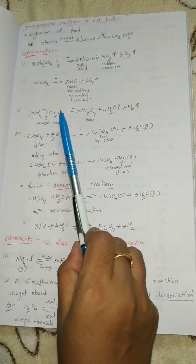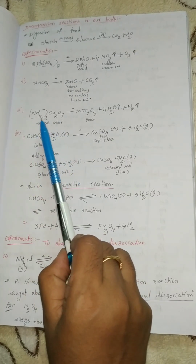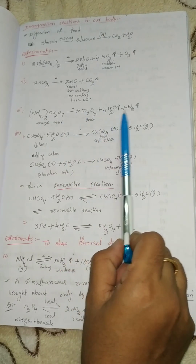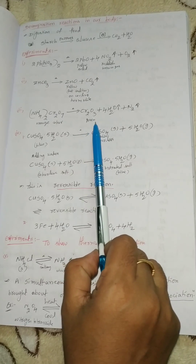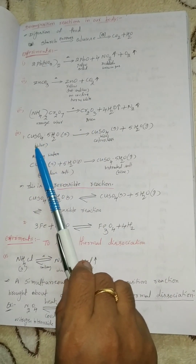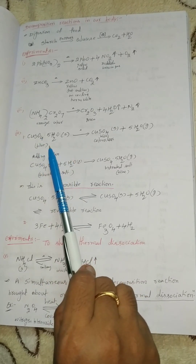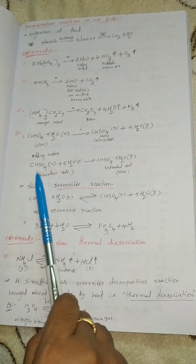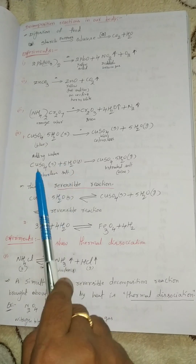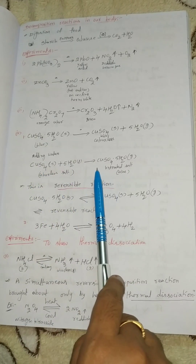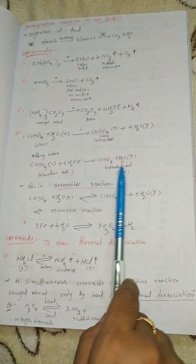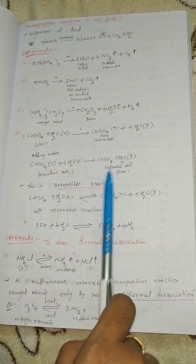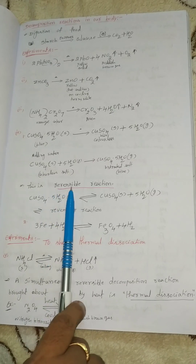Next experiment: NH4(2Cr2O7) — which is orange in color — decomposes to form Cr2O3 plus H2O plus N2. Cr2O3 is green in color, so the color changes. Next, CuSO4·5H2O is blue in color, while CuSO4 is white. When water is added to CuSO4, CuSO4·5H2O — a hydrated salt — forms and is blue in color. This is a reversible reaction: CuSO4·5H2O ⇌ CuSO4 + 5H2O.